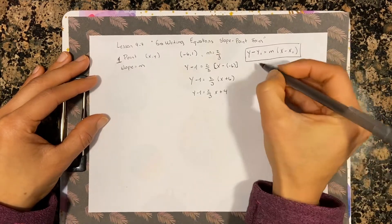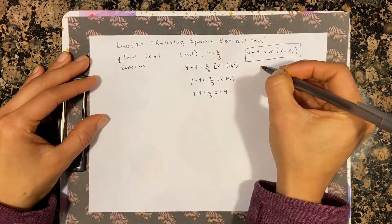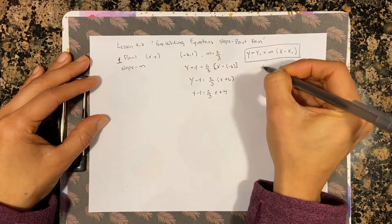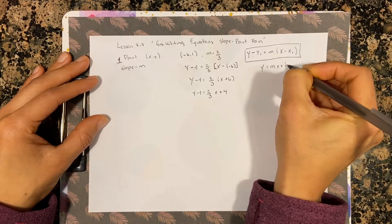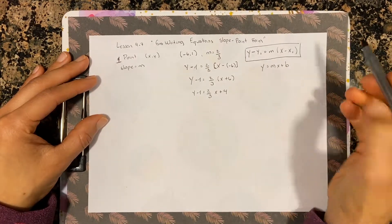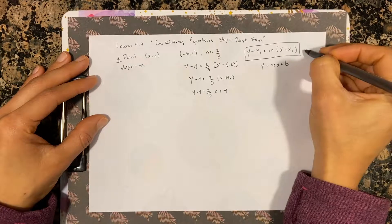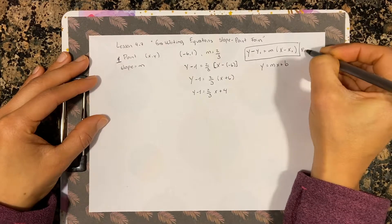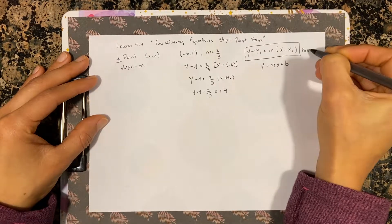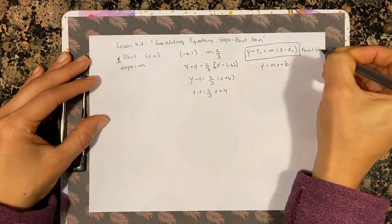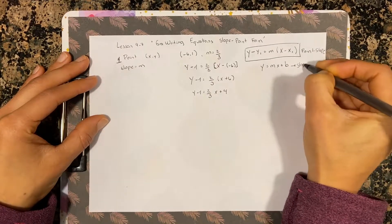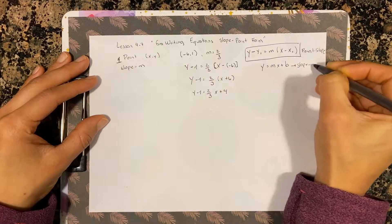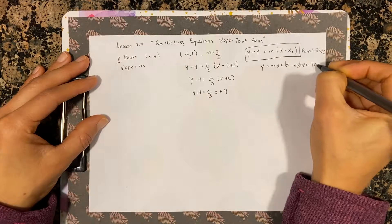Remember that the formula for slope-intercept form is y = mx + b. Today we are writing in point-slope form, and the other one is the slope-intercept form.